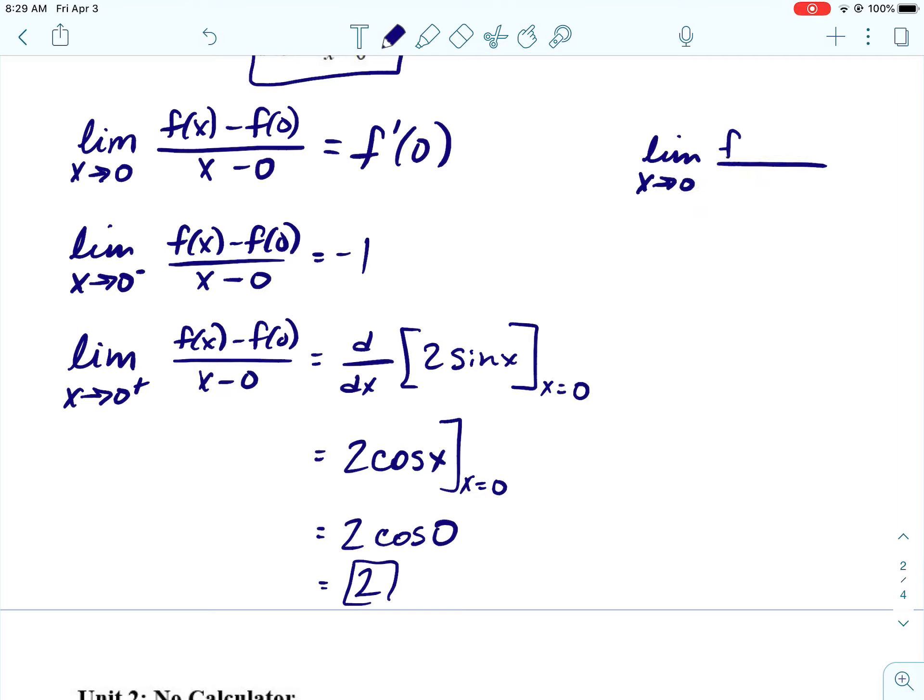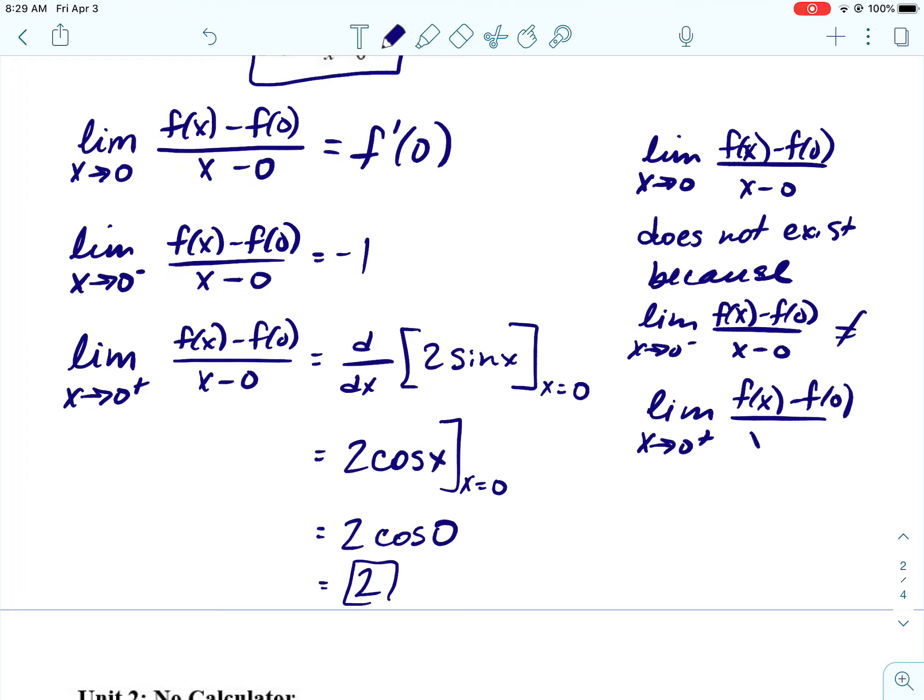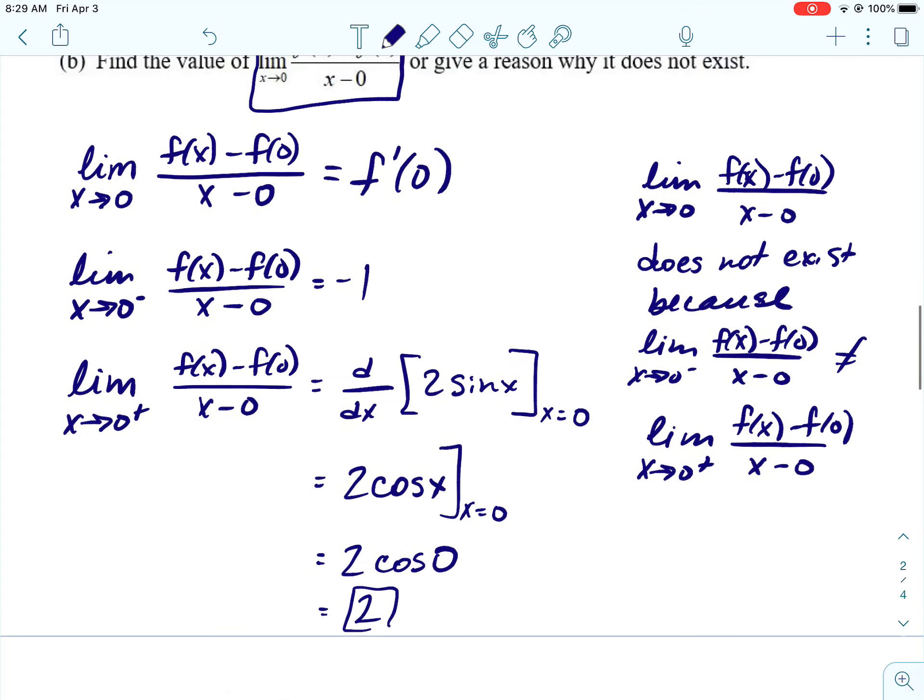Alright. So then you would need to make a note, a statement, that the limit as X approaches 0 of that expression F of X minus F of 0 over X minus 0 does not exist. Because the limit as X approaches 0 from the left of the expression does not equal the limit as X approaches 0 from the right.